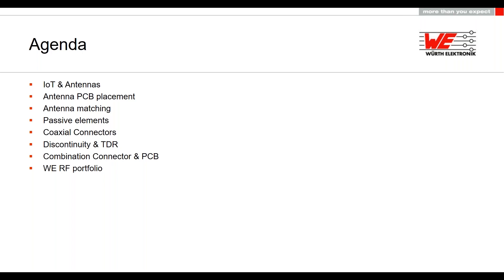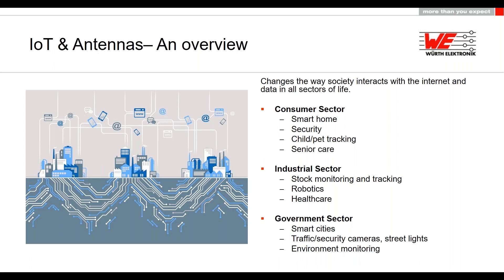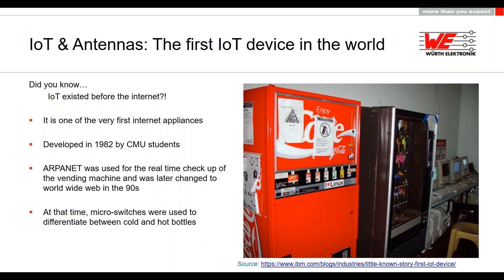More or less everyone is familiar with the term IoT — the Internet of Things — which refers to the billions of devices around the world that are connected to the internet and able to collect and share data. The applications are numerous, spanning homes, healthcare, environment monitoring, and more. Here is a fun fact: IoT existed even before the Internet. In 1982, students from Carnegie Mellon University were able to remotely track the stock of drinks in a vending machine using ARPANET.